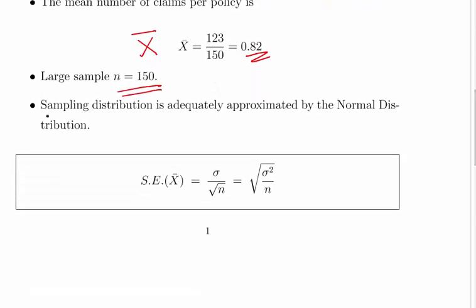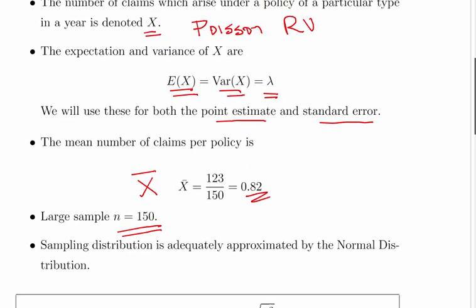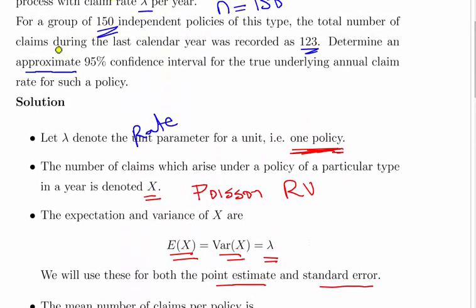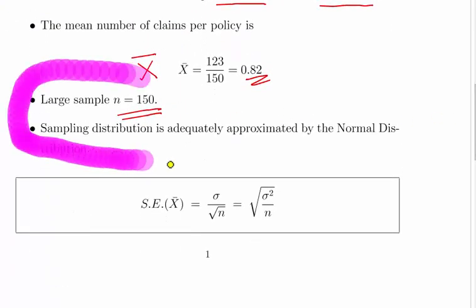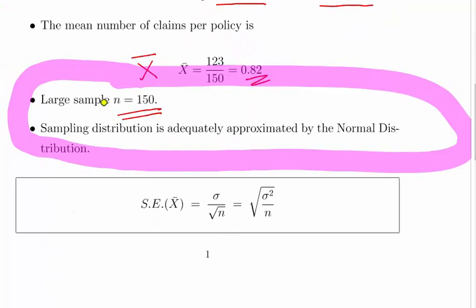And it's a large sample. Now, when I sort of said an approximate thing here, it's just good practice to put in a little bit of a justification, some sort of sentence like this: we're dealing with a large sample, the sampling distribution is adequately approximated by the normal distribution. Just something like that, just to sort of demonstrate your thought process here and why the word approximate there is relevant, just to fill in your answer properly.